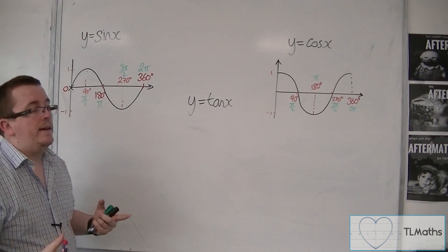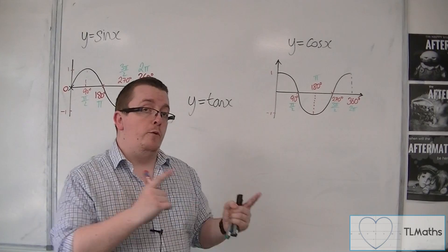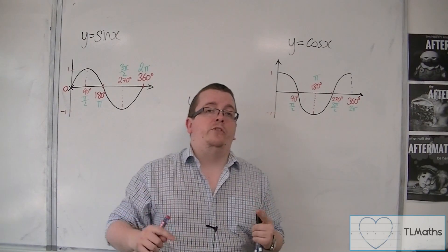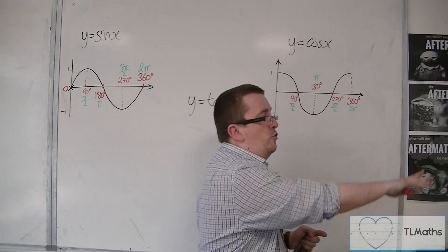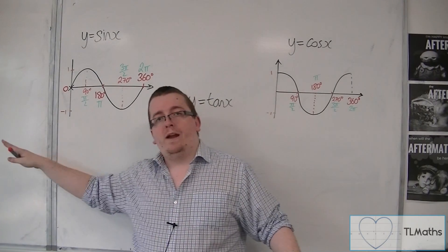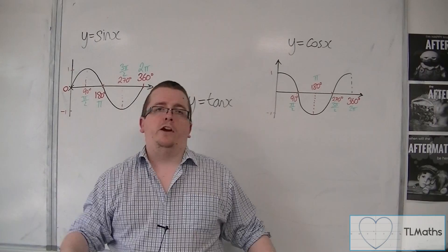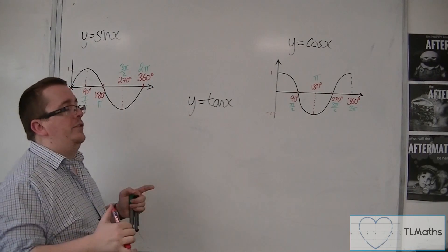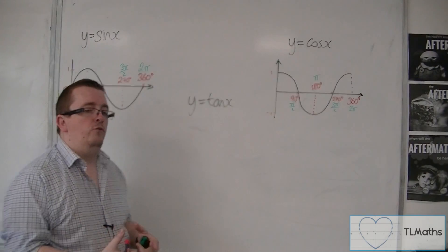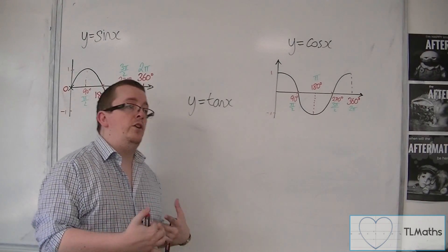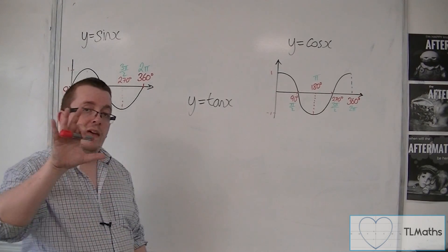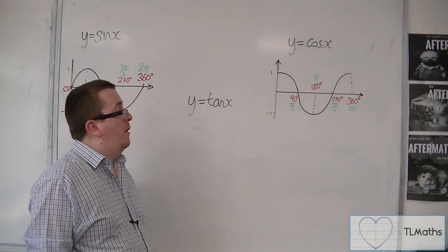All I'm sketching here is the curves between 0 and 360, or 0 to 2π. But in actual fact, these curves go on and on forever and ever in both directions. They never end, and they are therefore referred to as periodic because they repeat themselves. We're going to look at that in a little bit more detail later on.